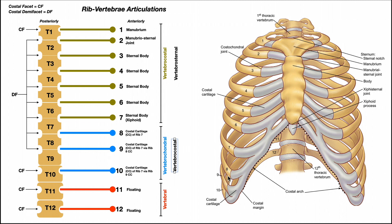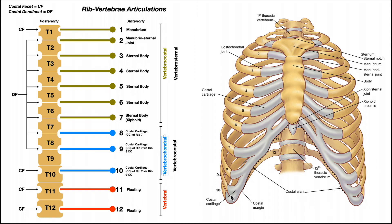Because ribs 8 through 10 have these costal cartilage attachments directly or indirectly to rib 7's costal cartilage, they're called vertebrocostal — that's the terminology if you've used vertebrosternal for ribs 1 through 7. If you used vertebrocostal for 1 through 7, then 8 through 10 are vertebrochondral, since 'chondral' means cartilage. Just keep these straight according to what your instructor says.